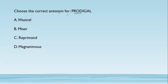Choose the correct antonym for 'prodigal.' Prodigal is someone who wastes money or is very extravagant — a spendthrift. The correct antonym for prodigal will be 'miser,' because a miser does not spend a lot of money; he saves it for future benefit. 'Wastrel' is a synonym for prodigal — it also refers to a person who wastes a lot of resources or money.